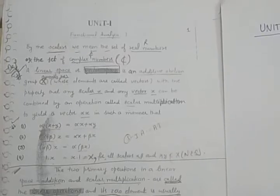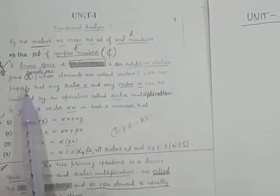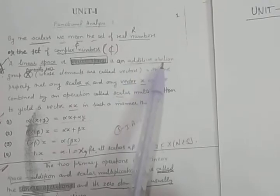Good morning students, today we start with Unit 1: Functional Analysis. By scalars we mean the set of real numbers, denoted by capital R, or the set of complex numbers, denoted by C. A linear space or a vector space is an additive abelian group whose elements are called vectors.